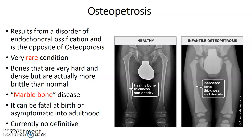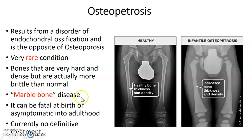Osteopetrosis — watch this term carefully because it looks a lot like osteoporosis, and the boards love to trip you up with these terminologies. Watch the suffix -petrosis versus -porosis. This is a very rare condition termed marble bone disease. The bones are very hard and dense but are actually more brittle than normal. It can be fatal at birth or asymptomatic, and there's no definitive treatment. You can see how white the bones are — almost marble-like.